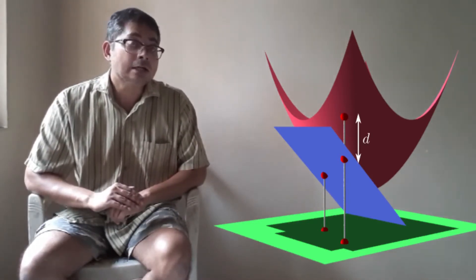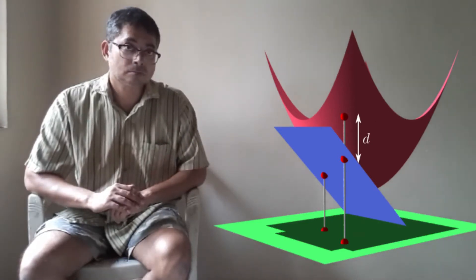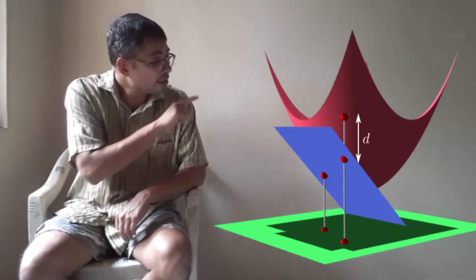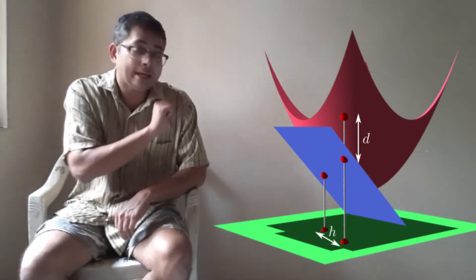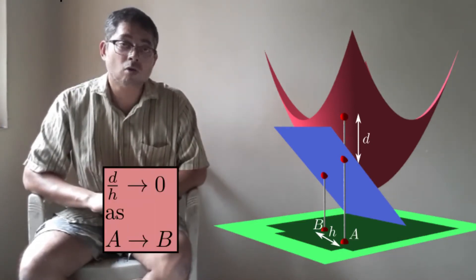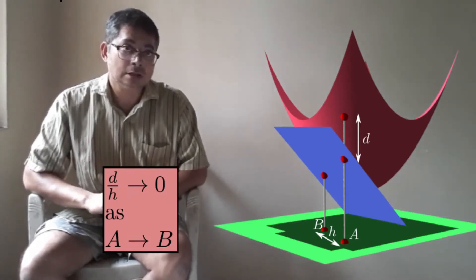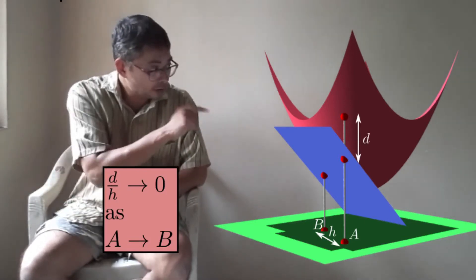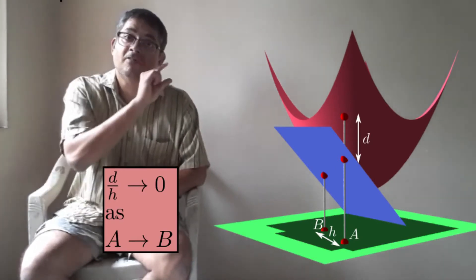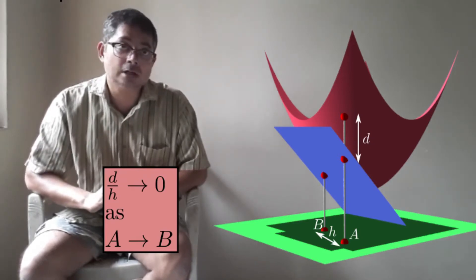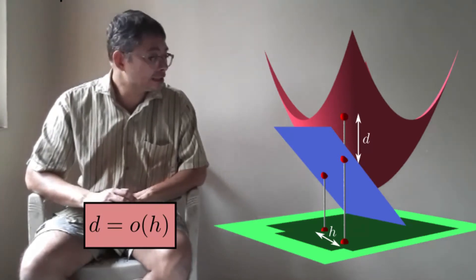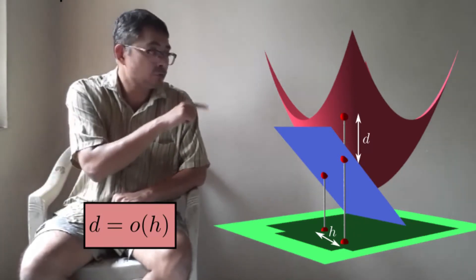However, there is something stronger which is true. If you divide that vertical height by the distance of the two points in the xy plane, then that ratio will also go to zero as this point moves towards that point. In other words, that vertical gap will be of the order little-o of h, where h is the distance in the xy plane between these two points.